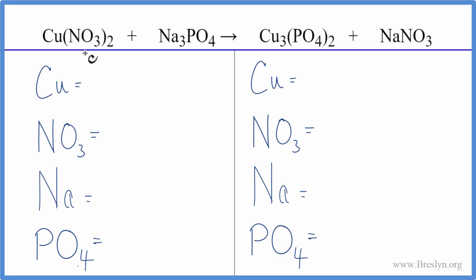In this equation, we have copper(II) nitrate and sodium phosphate reacting in a double displacement reaction. The copper and the sodium are going to switch places.